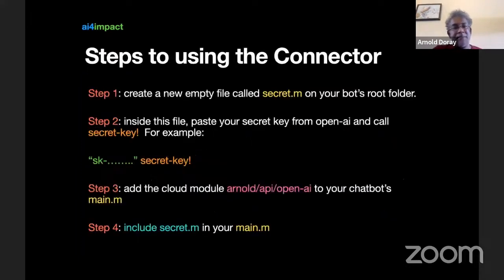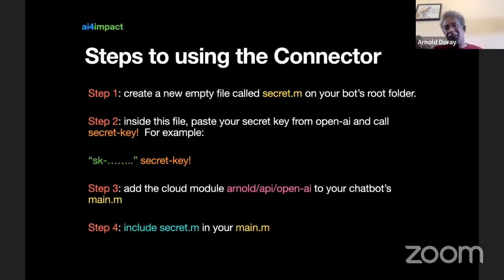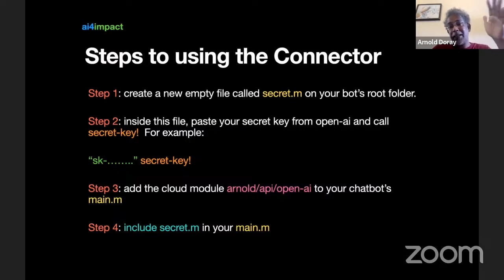After recording your secret key, the first implementation step is to go to your C101 or whatever chatbot you want to add GPT intelligence to, and create a new empty file at the same level as your main.m — call it secret.m, for example. Inside this file, paste your secret key in double quotes — it turns green — then put a space and then 'secret-key!' That's it. Once that code runs correctly, it will set your secret key for use.